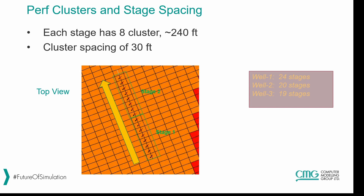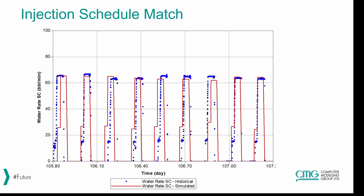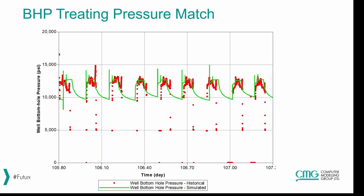For each injection well, each stage has eight clusters. Each stage is about 240 feet and the cluster spacing is 30 feet. Well one has 24 stages, well two has 20 stages, and well three has 19 stages. The injection schedule match is almost perfect because we are running on the injection rate. The pressure is what we are adjusting the dilation table to match, and as you can see the pressure is matching very closely to the historical data.